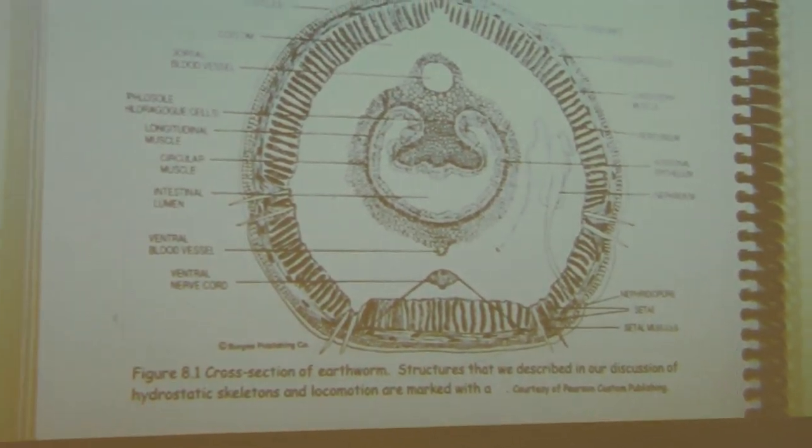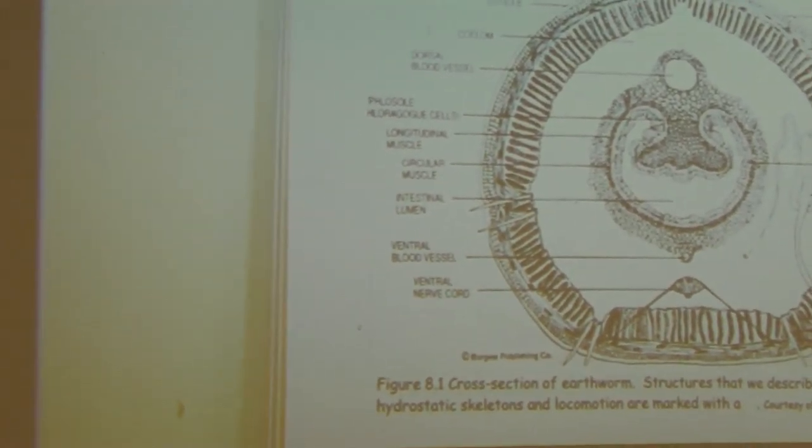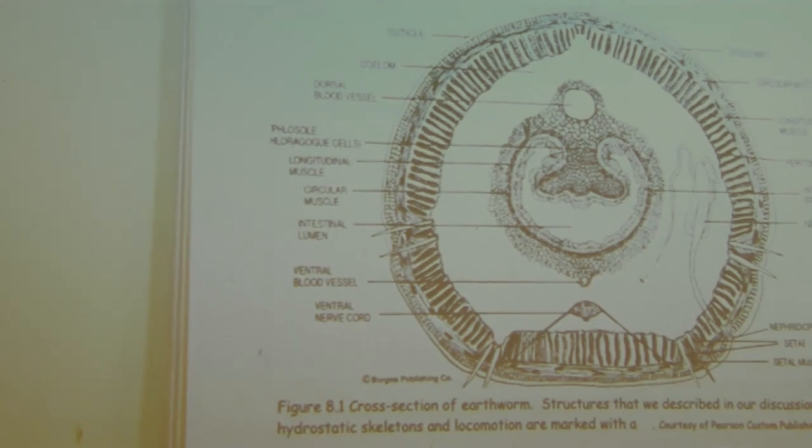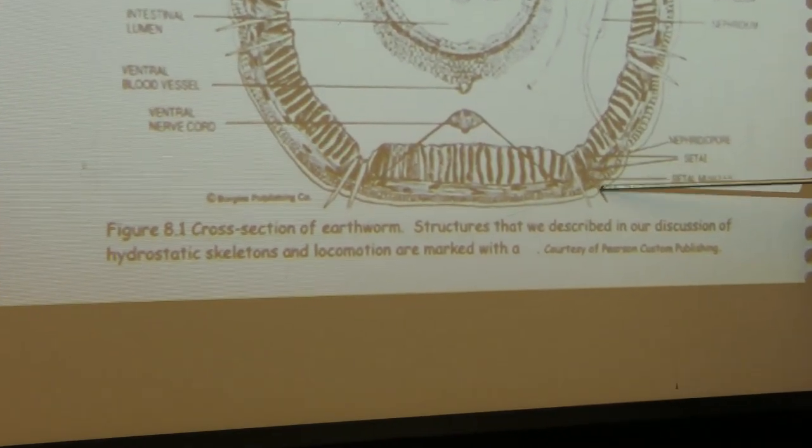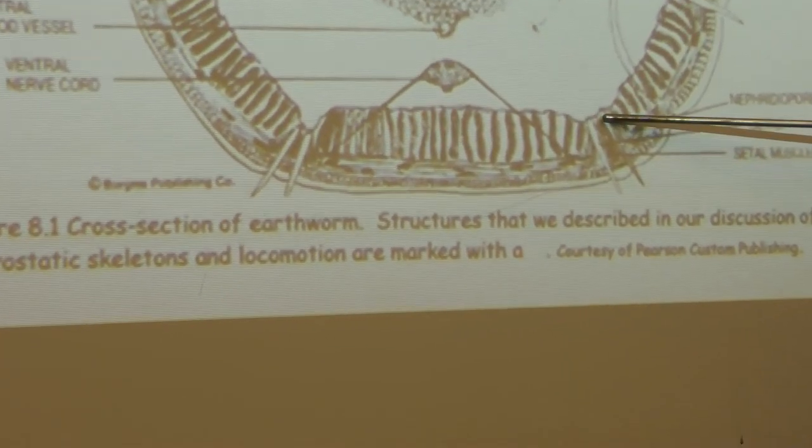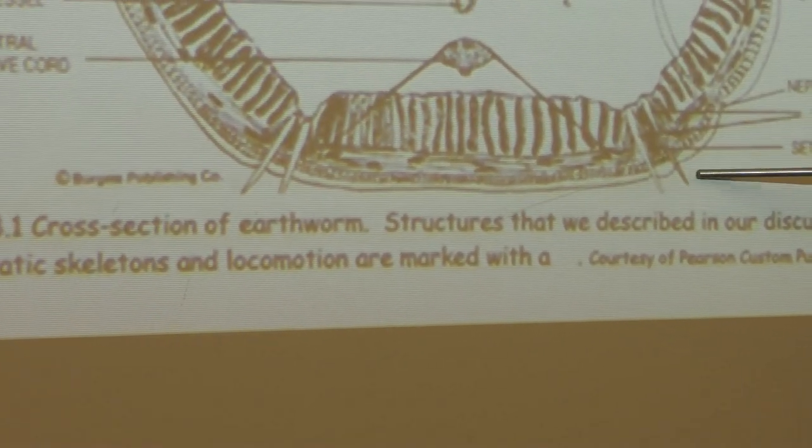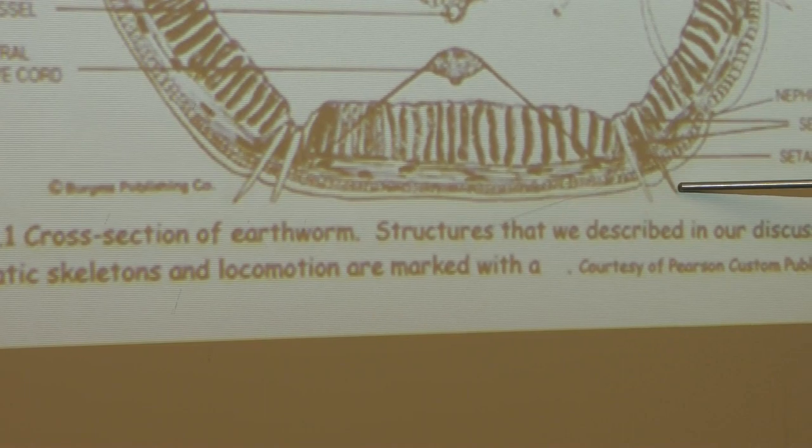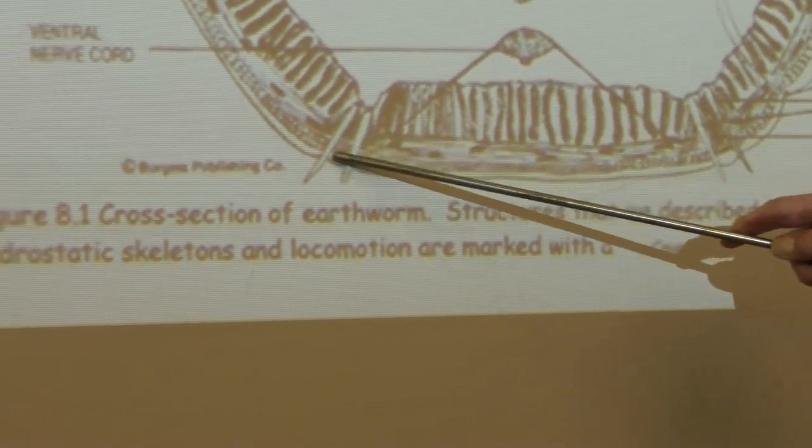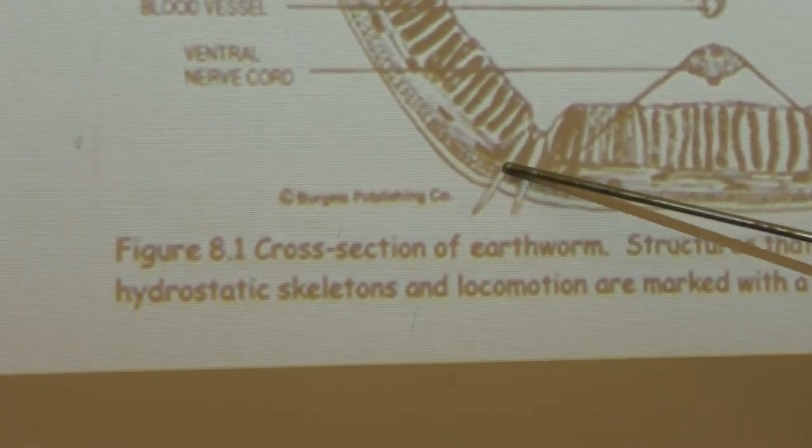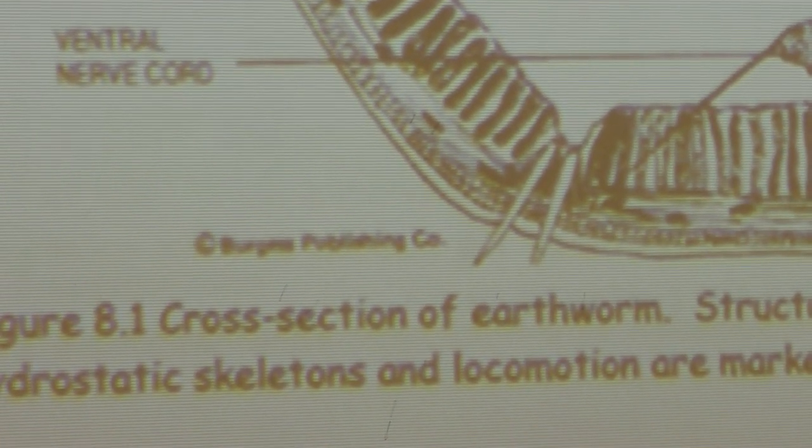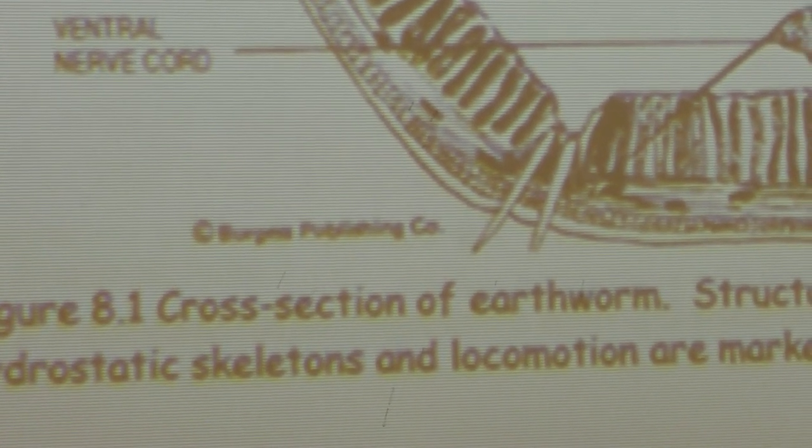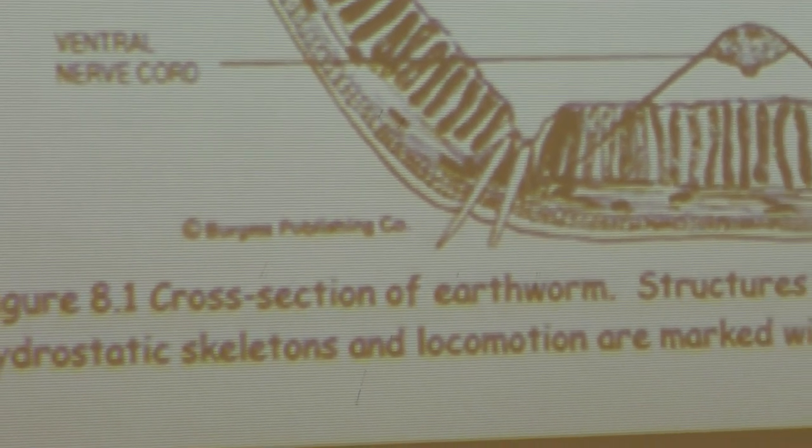One other structure we should probably point out while we're doing this are the setae. And these are the setae right here. And these are bristles. And you can see they're a pair of bristles that protrude out from the worm, outside the worm, into the external environment. And these structures are involved in holding or anchoring the worm to a surface. And we'll talk about how they're involved in the movement in a little bit. But don't forget that these are the setae or bristles.